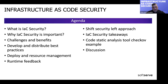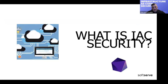So what is IAC security? As you may already know, Infrastructure as Code, also known as IAC, is an IT strategy that manages and qualifies IT infrastructure as software. IAC enables operations teams and developers to automatically provision, monitor, and manage resources instead of manually installing and configuring software each time. IAC security is the practice of securing infrastructure that is managed using Infrastructure as Code.